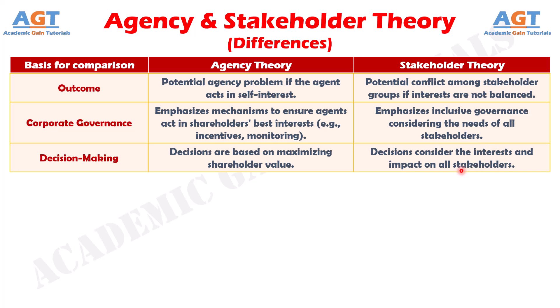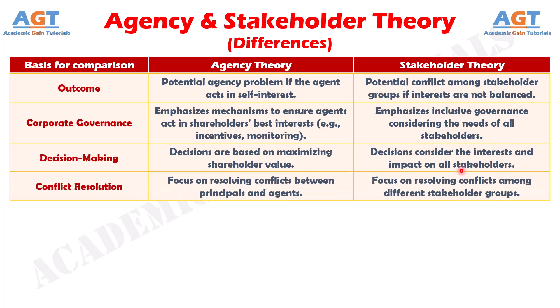Number nine: agency theory addresses conflicts between shareholders and managers, while stakeholder theory deals with conflicts among various stakeholder groups.